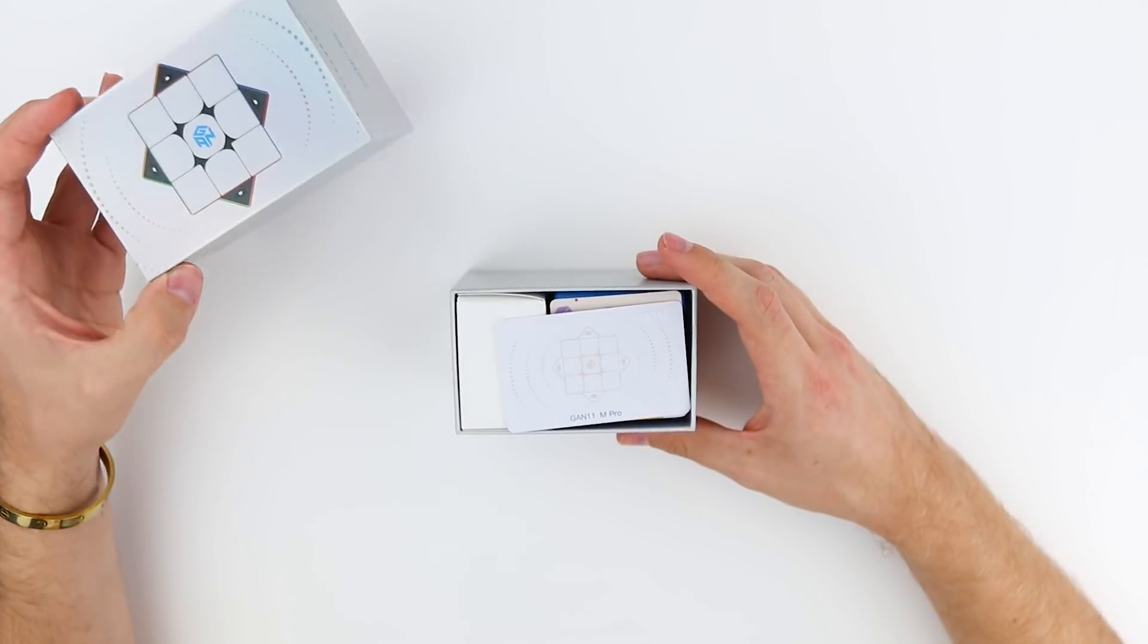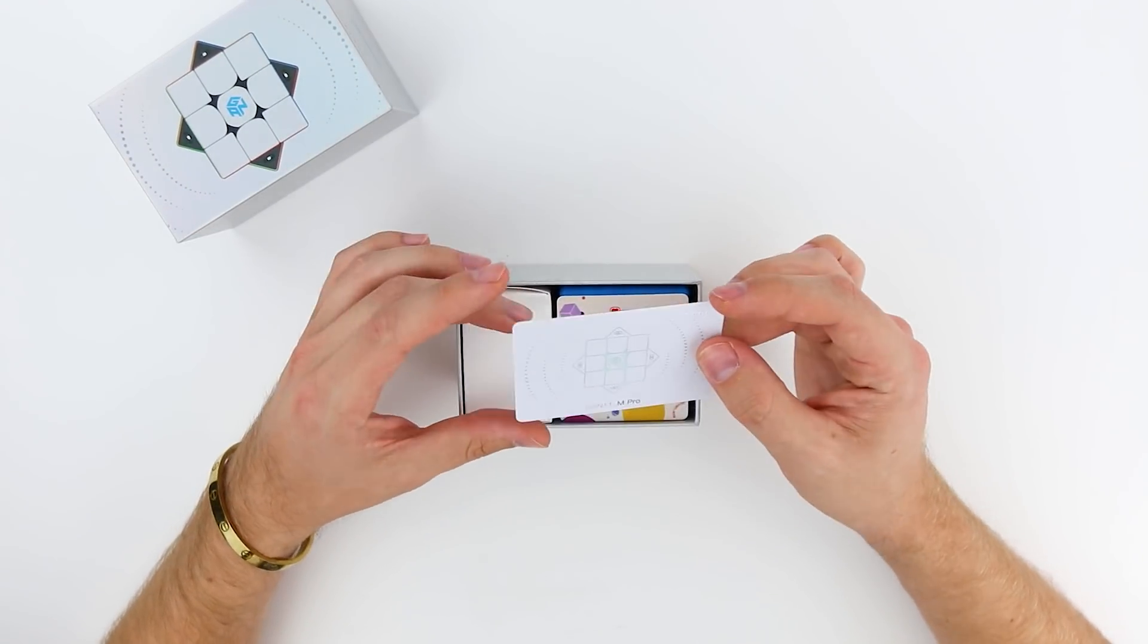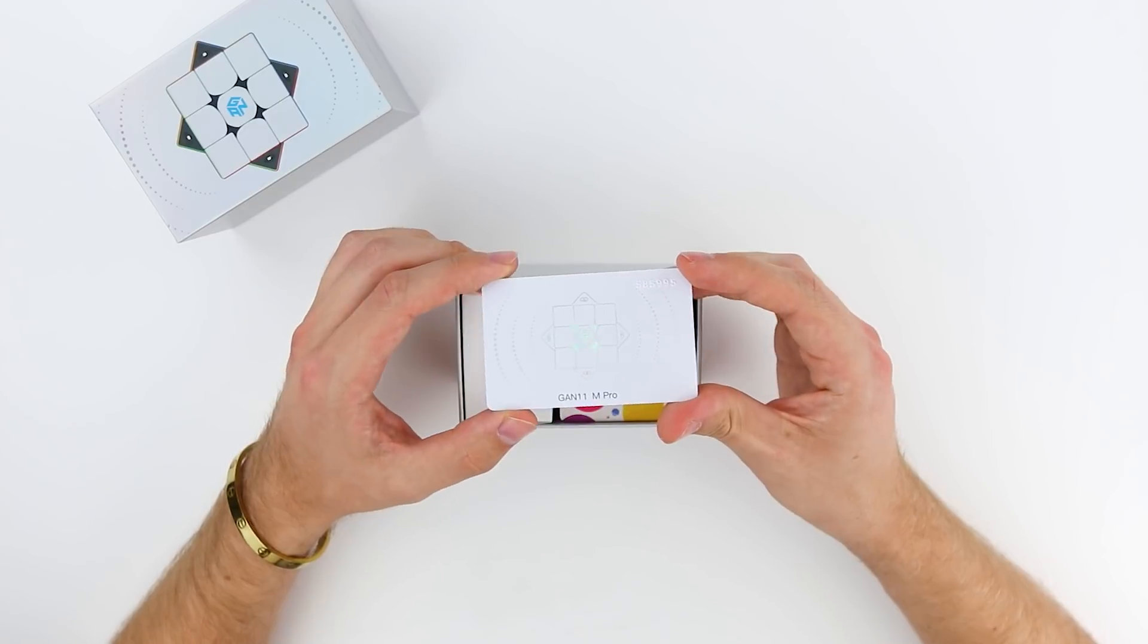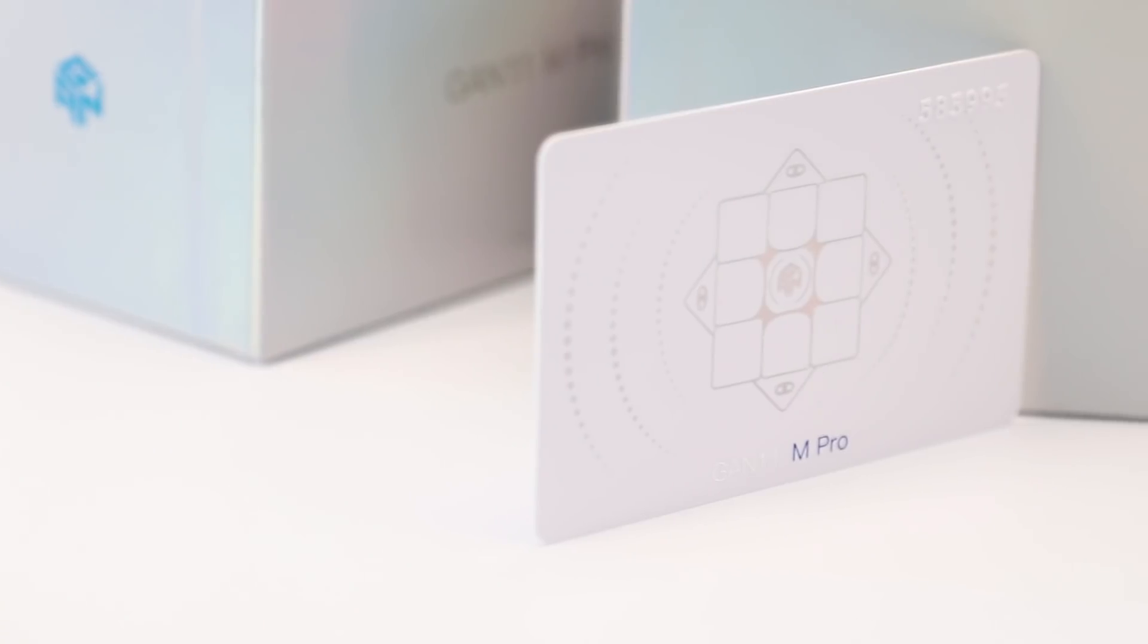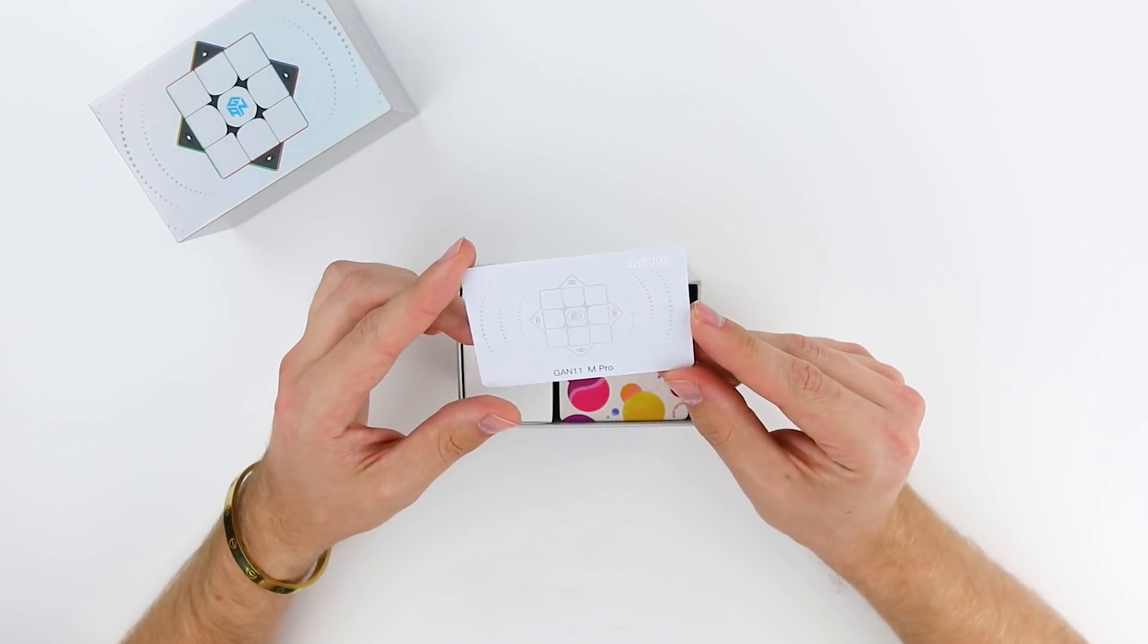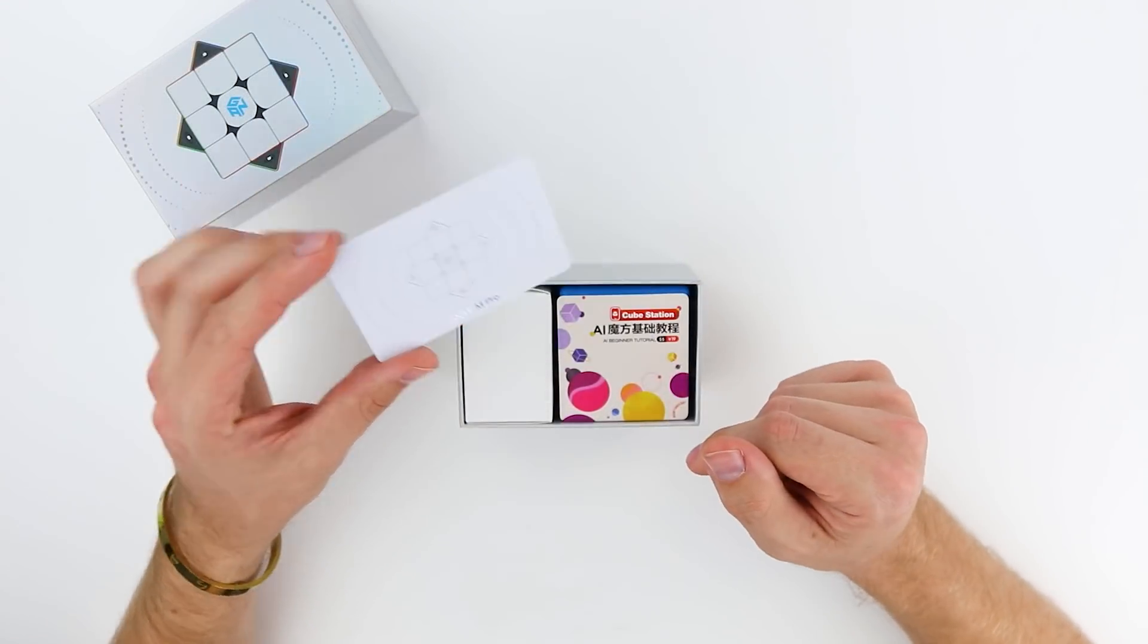Let's go ahead and take a look at what's inside the box. Anticipation is killing me. Okay, we have a very cool holographic ID card that has the serial number and some social media QR codes on the back. It has a picture of the GAN-11 M-Pro on there.